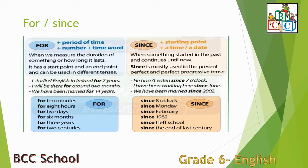The word 'for' is used when we measure the duration of something, or how long it lasts. For example: I studied English in Ireland for two years. I will be there for around two months. We have been married for 14 years. Other examples: for 10 minutes, for 8 hours, for 5 days, for 6 months, for 3 years, for 2 centuries.